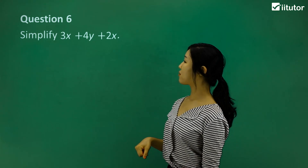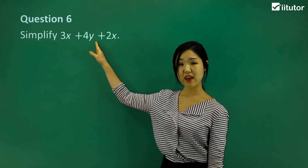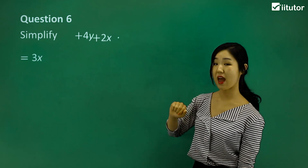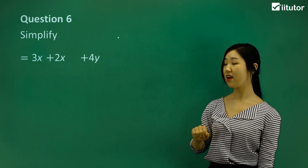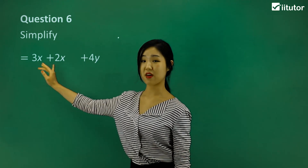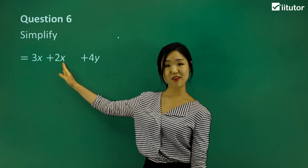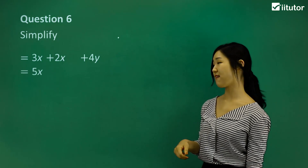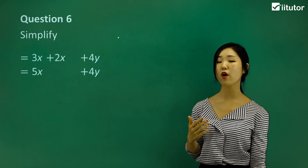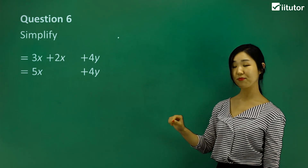Question six: simplify 3x plus 4y plus 2x. This time I can't say they are all like terms, because we've got x's and a y. The like terms are 3x and 2x. I'll put the 4y at the end and group the x's together first, since those are the like terms. 3x plus 2x is simply 5x, then we drag the 4y down. So the answer is 5x plus 4y. We can't simplify any further because there are no more like terms.